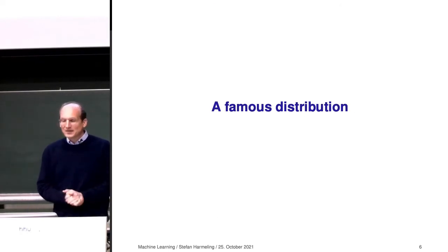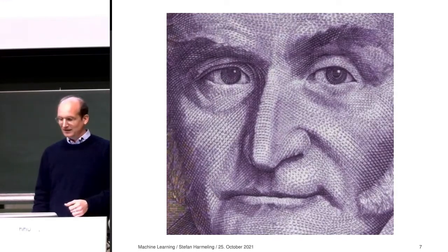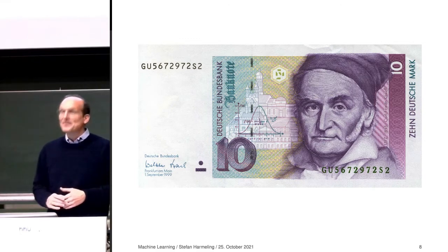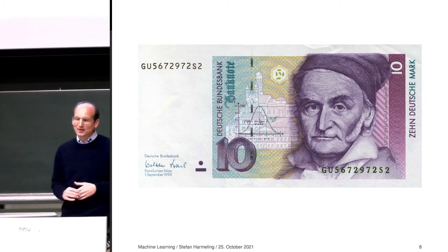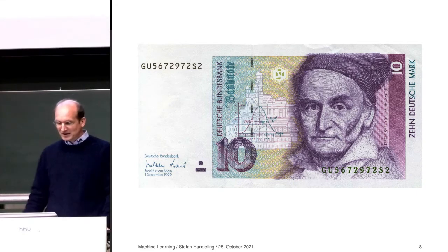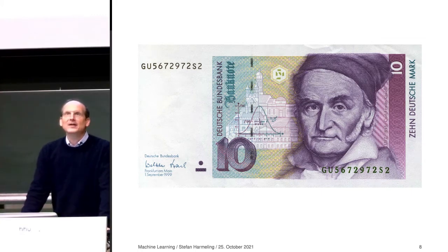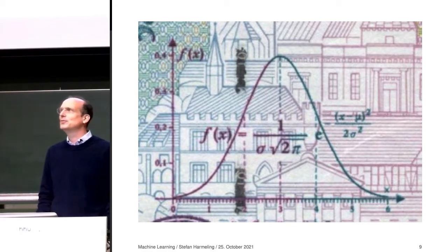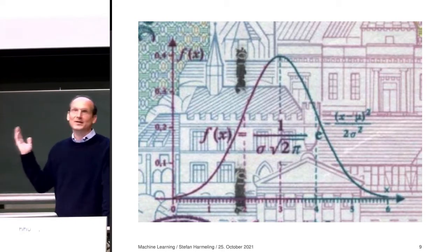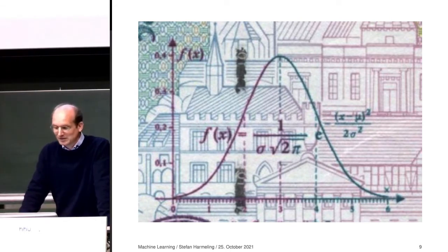Let's get started with our famous distribution — the Gaussian distribution. It's so famous that there's a nice picture of it on the 10 Deutsche Mark note. Before the Euro was introduced, we had these really nice banknotes with Karl Friedrich Gauss on them. During your exam in school you could copy the formula of the Gaussian distribution from the banknote. This is the Gaussian distribution using our notation: a curly N of x, mu, and sigma squared — a function with three inputs.